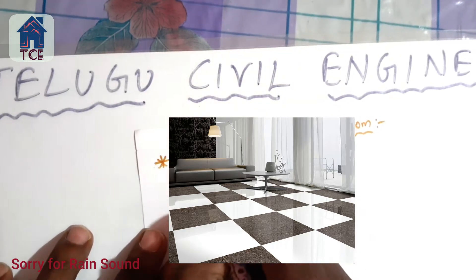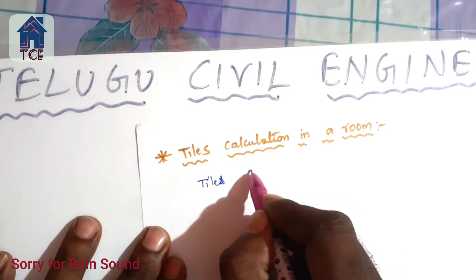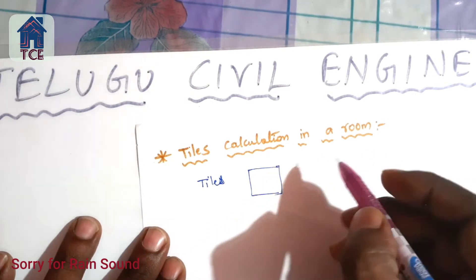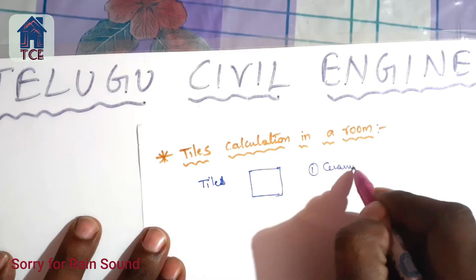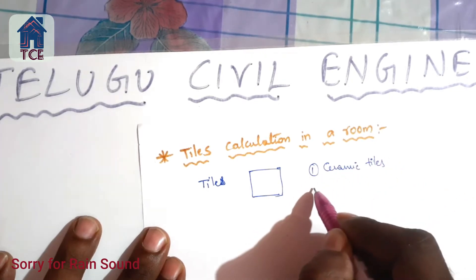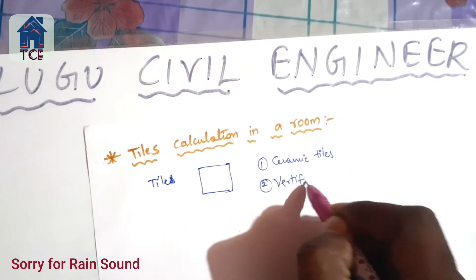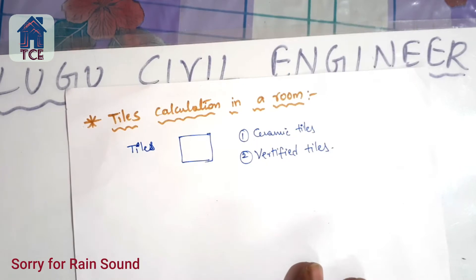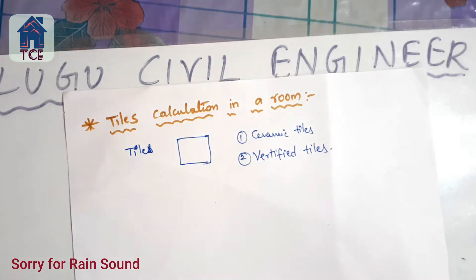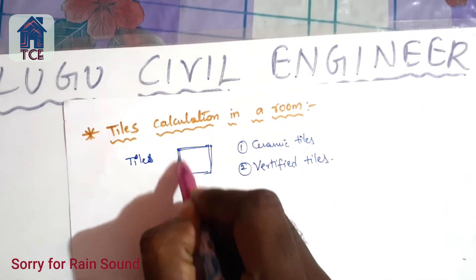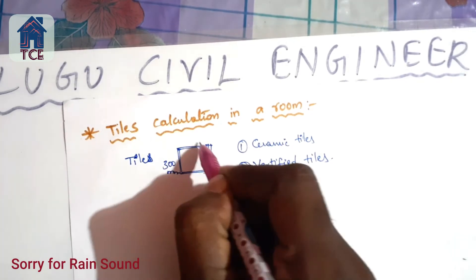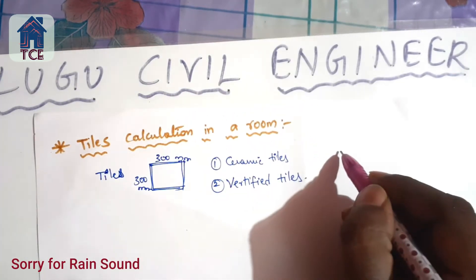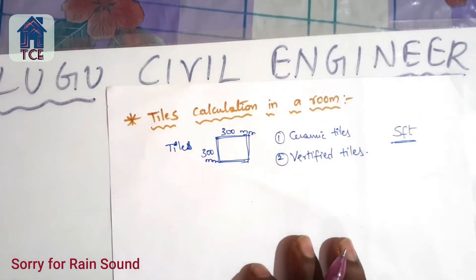We will find different types of tiles — different sizes and types, such as ceramic tiles and rectified tiles. There are two types of tiles: ones used on the wall and ones used on the floor. These units are SFT; the tiles are calculated only in SFT.